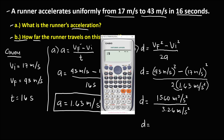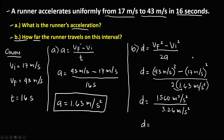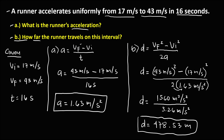So the displacement equals 1560 divided by 3.26, which equals 478.53 meters. This is the displacement of the runner.